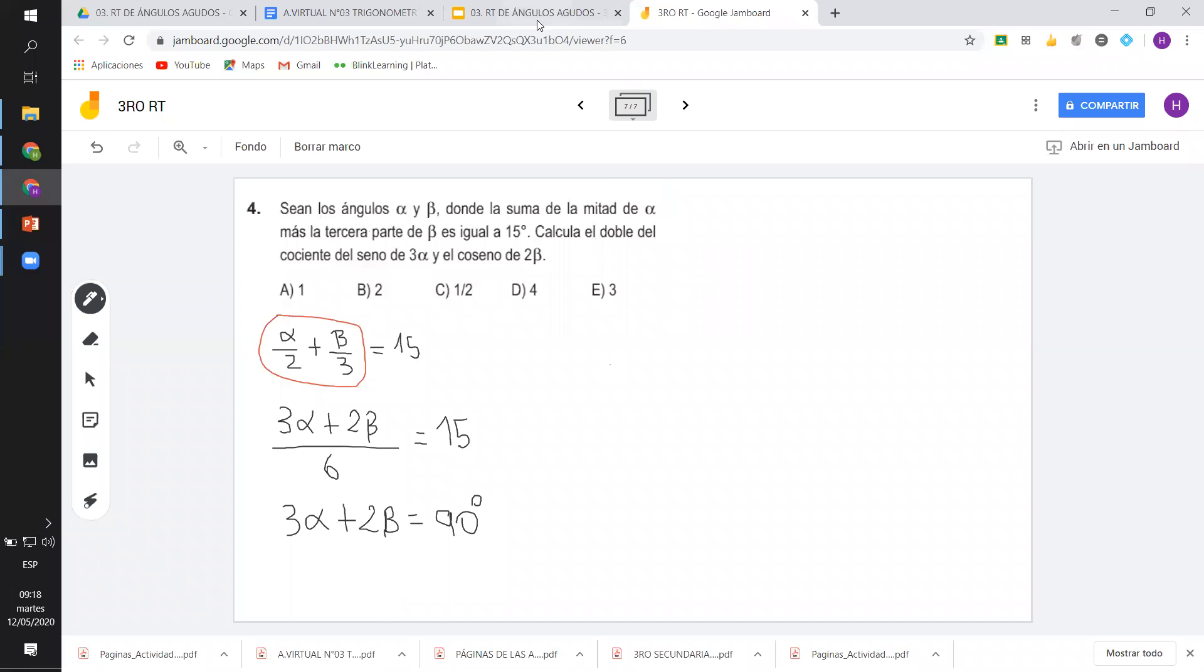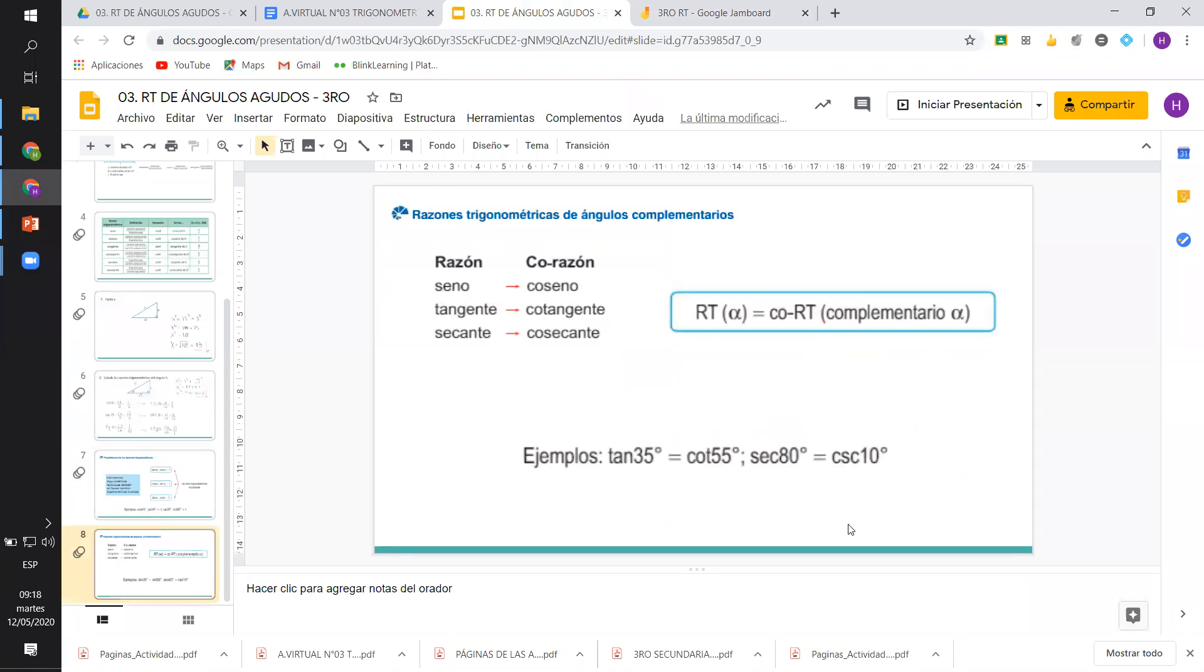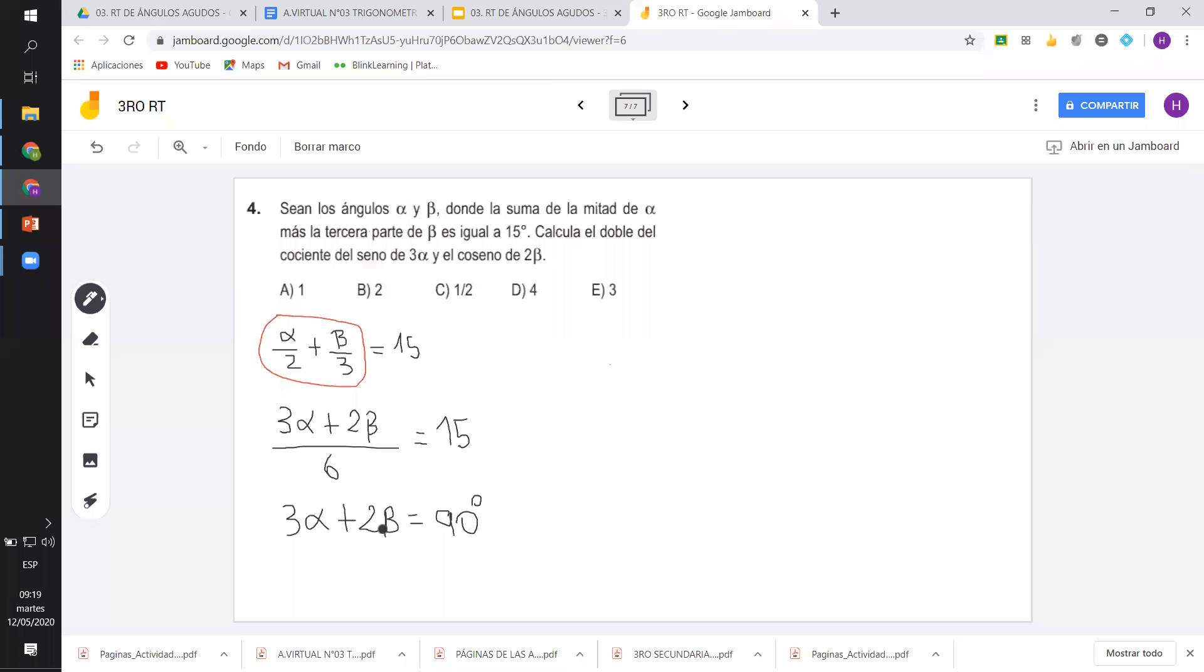¿Qué me decía la propiedad de los ángulos complementarios? Los ángulos complementarios, que los dos ángulos sumados tienen que dar 90. Y las razones trigonométricas de los ángulos complementarios eran del seno su coseno. De la tangente, la cotangente. Y de la secante, la cosecante. Entonces, regresando acá. ¿Qué quiere decir esto? Que si son complementarios, y justo acá te dice el seno de 3 alfa y el coseno de 2 beta.